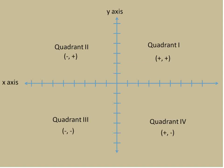Speaking of positives and negatives, it brings us into talking about quadrants. The quadrants are one, two, three, and four. In quadrant one, all the x-values will be positive and all the y-values will be positive because it's to the right and up. In quadrant two, we move to the left and up, so it's positive y-values but negative x — any points there will be (negative, positive). In quadrant three, we have negative x-values and negative y-values. In quadrant four, we have positive x-values and negative y-values, like the example point we gave earlier.